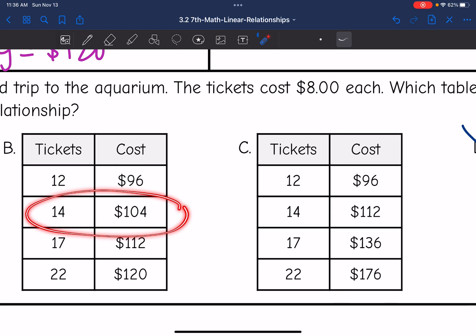Table B and C have different amounts for the cost of 14 tickets. So I'm going to do 14 times 8 to figure out which has the correct cost for 14 tickets. So 8 times 4 is 32, and then 8 times 1 is 8, plus 3 is 112. So 14 tickets cost $112, which table C has. So that's going to be the correct one.